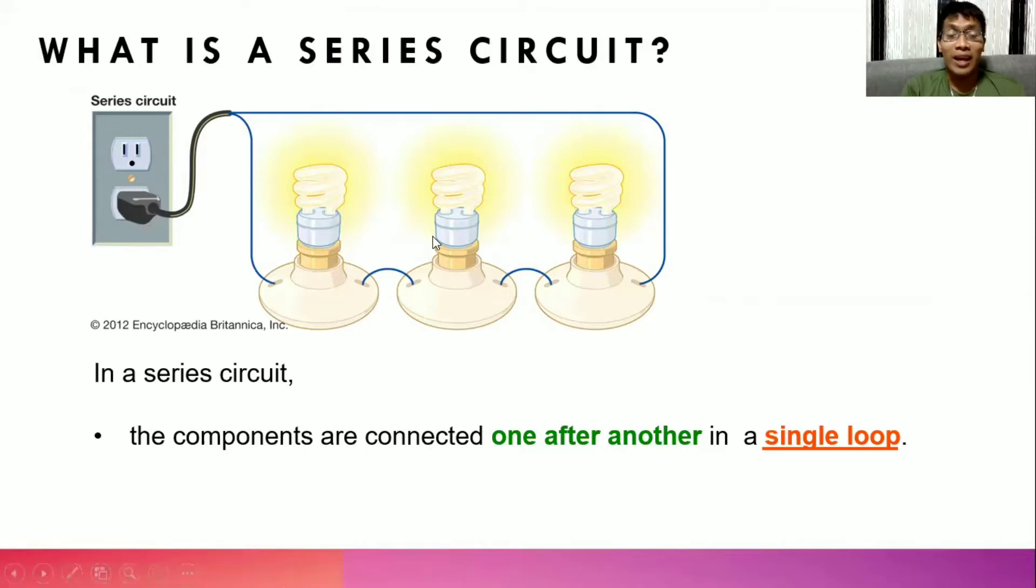And its component, using this picture, the components are the bulbs or the lamps. So they are connected in a single loop or it has a single pathway. But you have to take note that these bulbs can be placed in different positions. But you have to remember that it should always form a single loop.